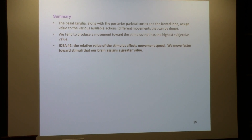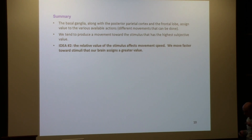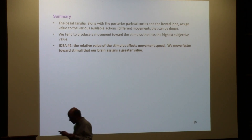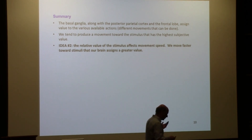So let's summarize where we are. We think that the basal ganglia, along with cortical structures, assign value to stimuli. We tend to produce movements toward stimuli that have the highest subjective value. Our second idea today is that the relative value of the stimulus affects the speed by which you move — we move faster toward stimuli that our brain assigns a greater value. One: we assign value and move toward things we value more — that's a decision-making problem. Two: we will move more vigorously toward the stimulus we value more. The rest of the lecture is about forming our first intuitions about a mathematical model that we can use to think about why this might be.